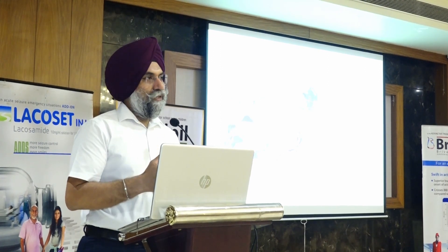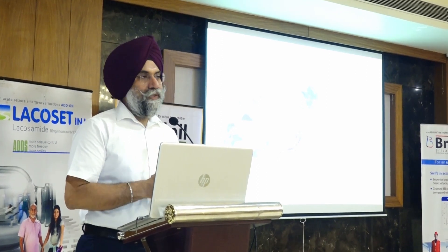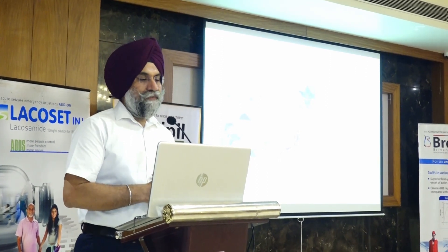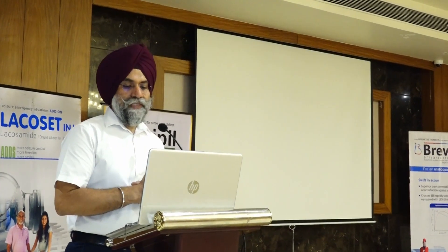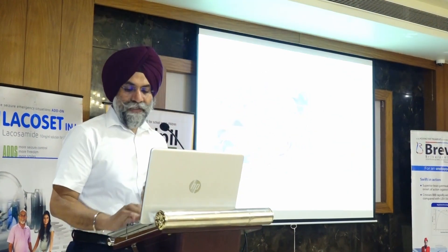It has very important neurovascular structures, which includes the major blood vessels of the brain — the internal carotid arteries — and all the nerves: third, fourth, V1 divisions, and the sixth nerve. They are in and around the cavernous sinus, along with a lot of venous tributaries and their drainage.